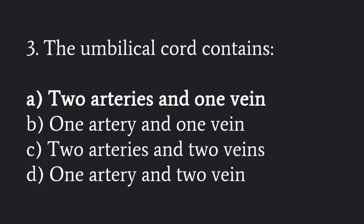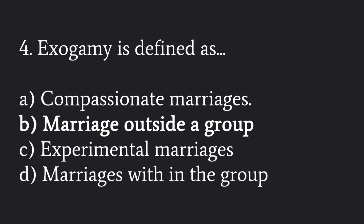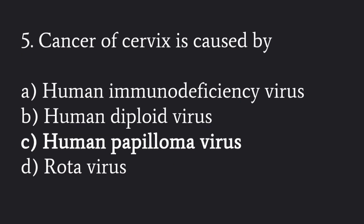The umbilical cord contains two arteries and one vein. Exogamy is defined as marriage outside a group. Cancer of the cervix is caused by the human papilloma virus.